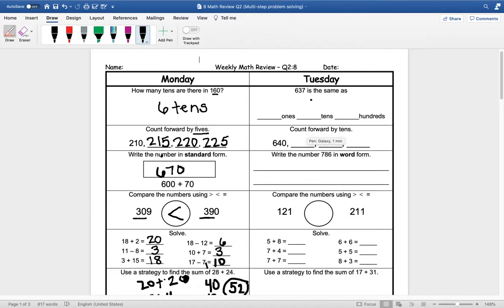The first question on Tuesday's Spiral Review says 637 is the same as we have 7 ones, 3 tens, and 6 hundreds.